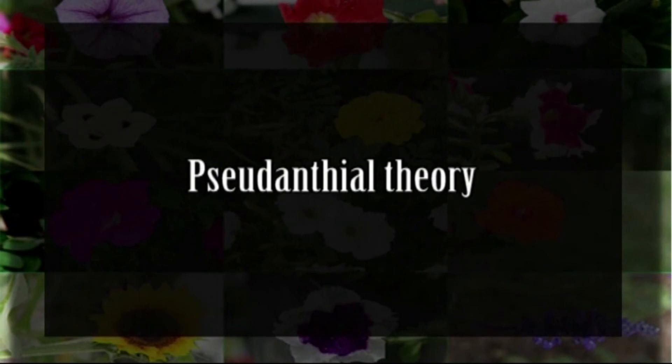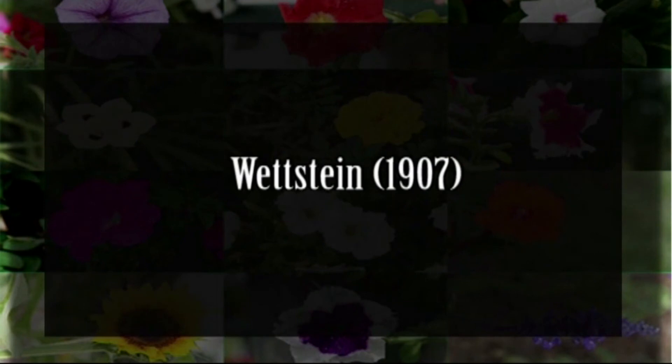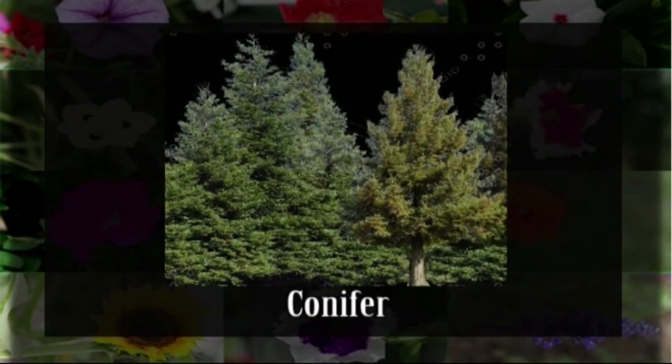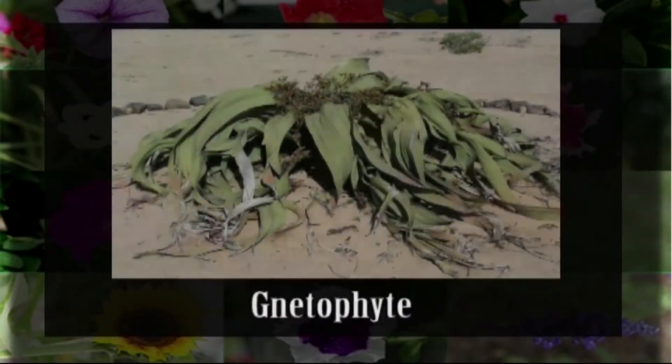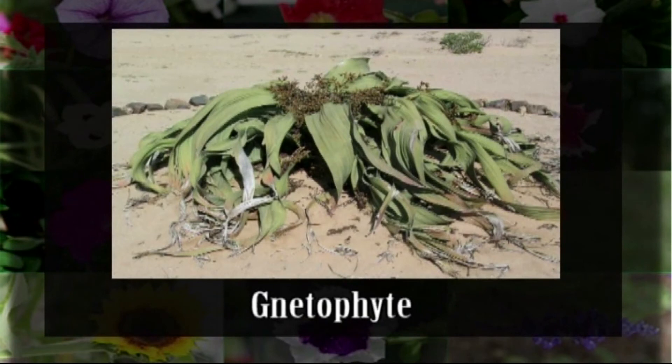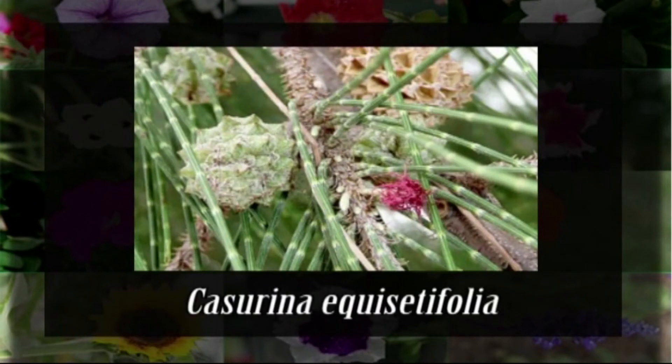Now let us discuss the Pseudanthial Theory, commonly associated with the Englerian school. The theory was first proposed by Wettstein in 1907. According to this theory, wind-pollinated cone-bearing naked seed plants may be the ancestors of angiosperms. Engler and others concluded that angiosperms evolved from conifers, Gnetophytes, and certain catkin-bearing angiosperms such as the forerunners of Casuarina equisetifolia.